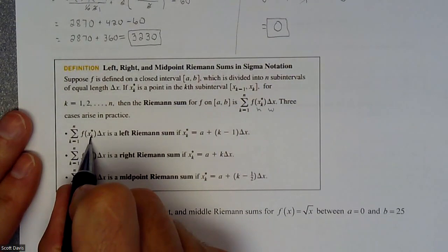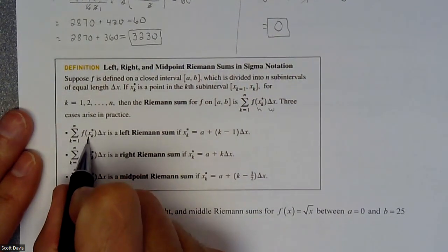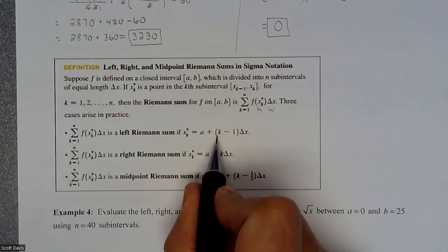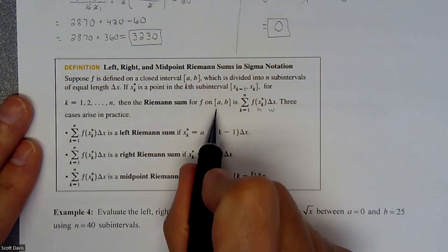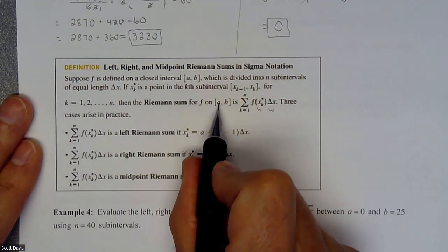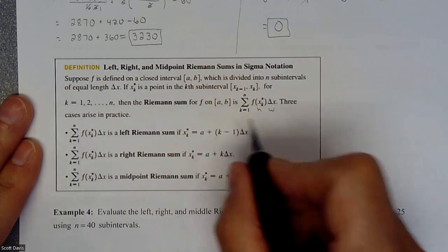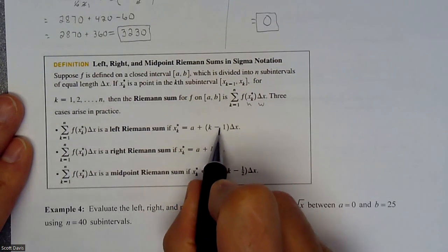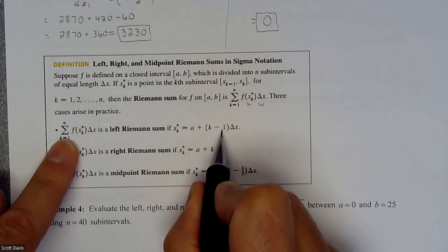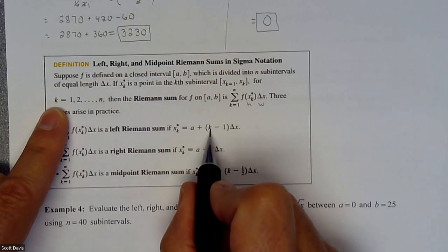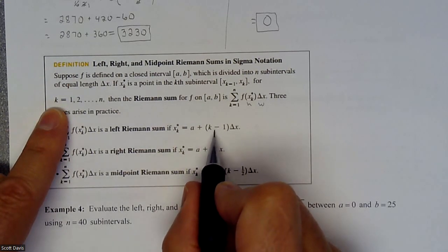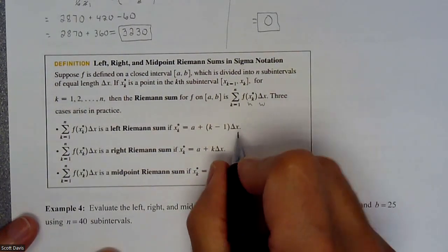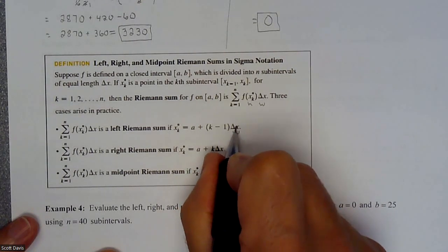If we're doing a left Riemann sum, this x_k* value is going to be based on a specific formula. Our a value represents our left endpoint — where we're starting. In this situation, we're starting at 0. Then our k minus 1 term: our k value is dictated by whether this is the first rectangle, the second rectangle — that's the variable throughout. And delta x is still your width.